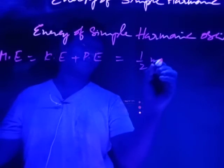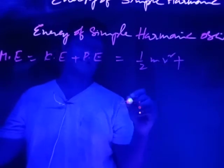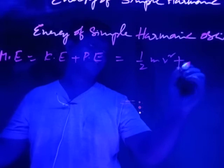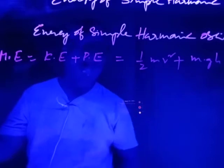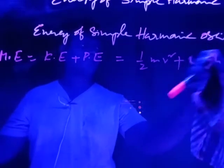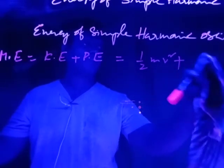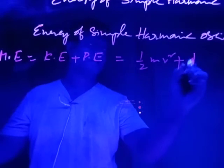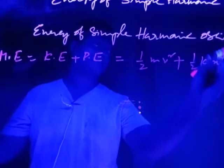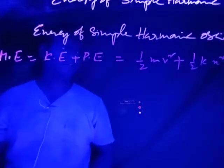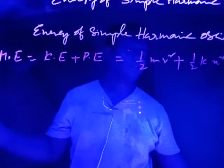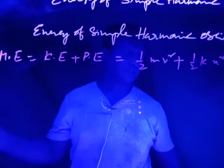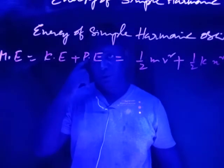The total energy of a simple harmonic oscillator equals kinetic energy plus potential energy: ½mv² + ½kx², where k is the spring constant of oscillation.